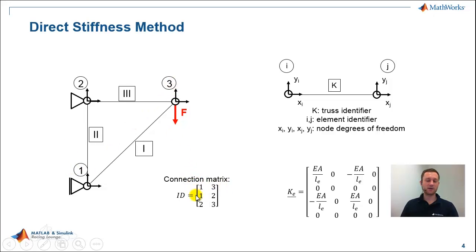The same for number 2, truss number 2. Truss number 2 is comprised of node 1 and 2. Same for truss number 3. So the ID matrix is always a two column matrix and the number of lines represents the number of trusses in your system.